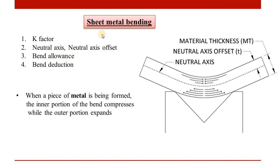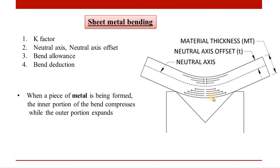First, we will talk about the bending process. When we bend a piece of sheet metal, it will form a curved shape. The inner portion will compress and the outer portion will expand. This is the basic concept of sheet metal bending.